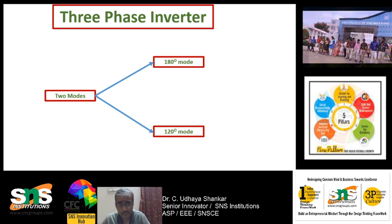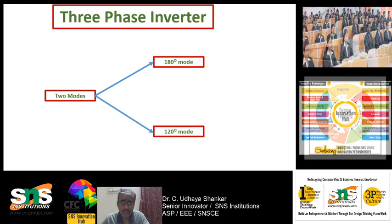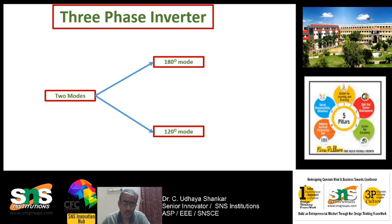Inverter is a device which converts the input DC supply to an AC output waveform. The AC output waveform can be single-phase or three-phase. If the inverter produces a three-phase output waveform then it is called a three-phase inverter. If it produces a single-phase output waveform then it is called a single-phase inverter.